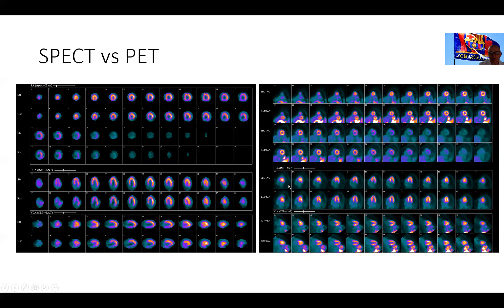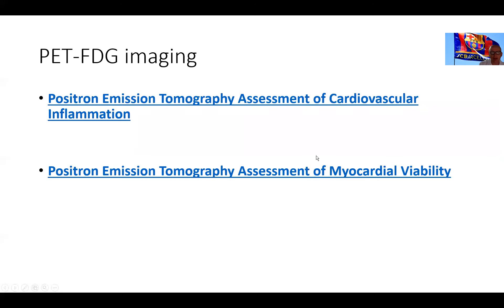Future sessions will compare sensitivity, specificity, and predictive value of these tests. Other PET applications to be discussed separately include PET for assessment of inflammation in myocarditis, sarcoidosis, and endocarditis, as well as PET for assessment of myocardial viability — particularly hibernation, which is the most commonly used indication for cardiac PET.